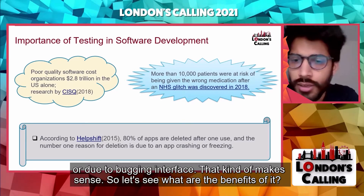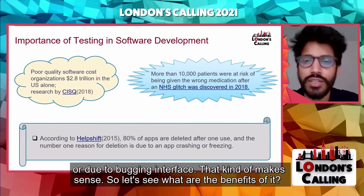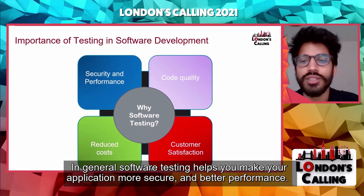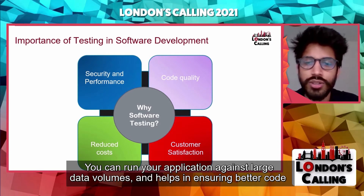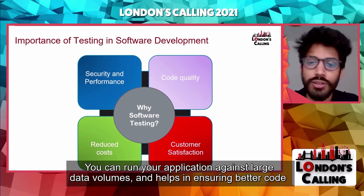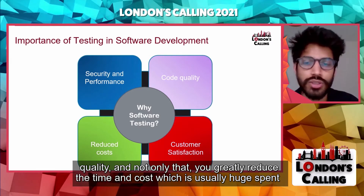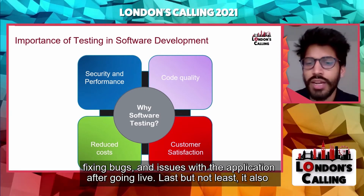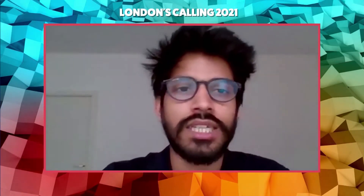So let's see what the overall benefits of software testing are. In general, software testing helps you make your application more secure and more performant. You can write specific tests to run your application against potential security issues and large data volumes. It also helps ensure better code quality, and you greatly reduce the time and cost — usually huge — spent fixing bugs and issues after going live. Last but not least, it also adds to customer satisfaction, as no one would be pleased to use a buggy application.